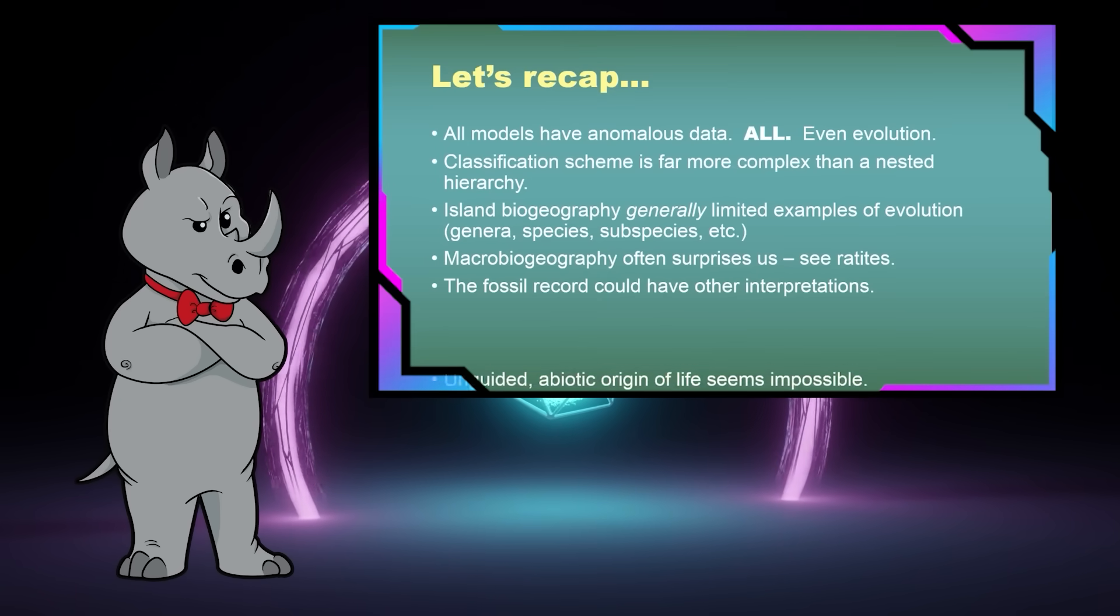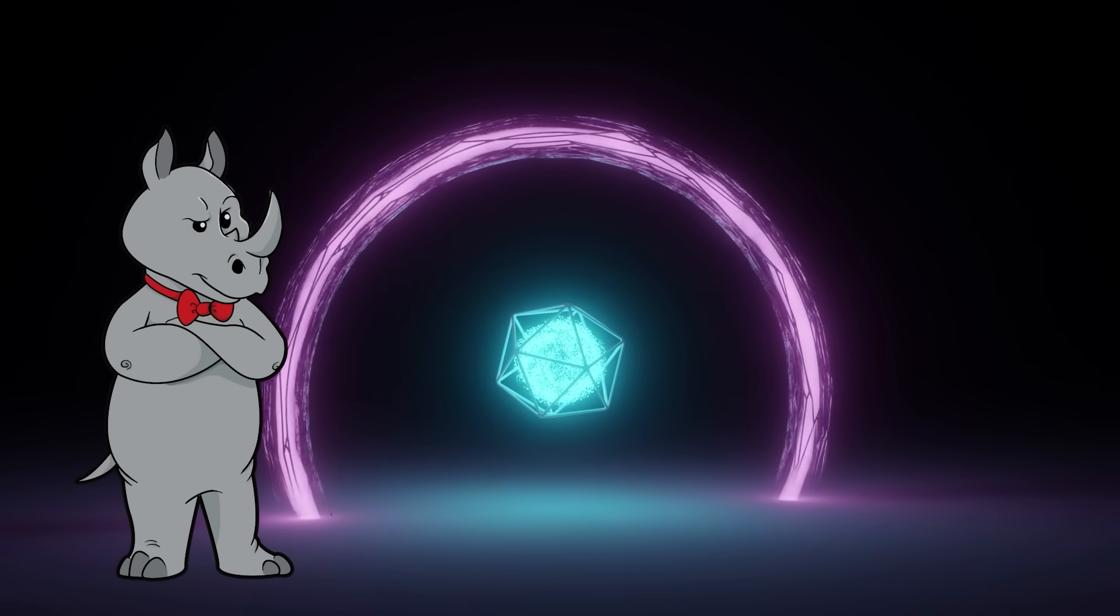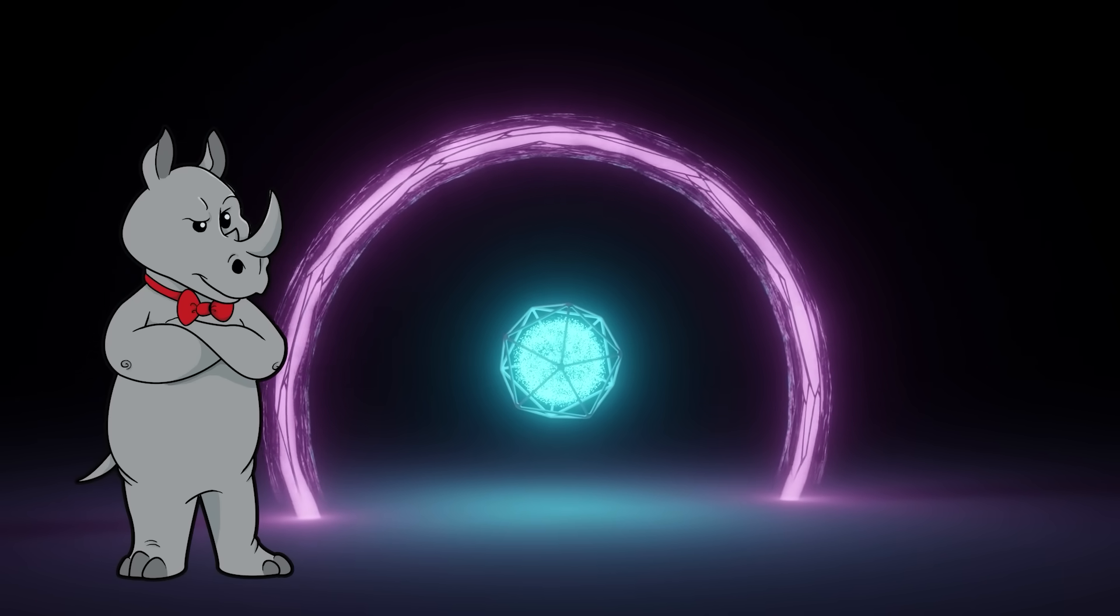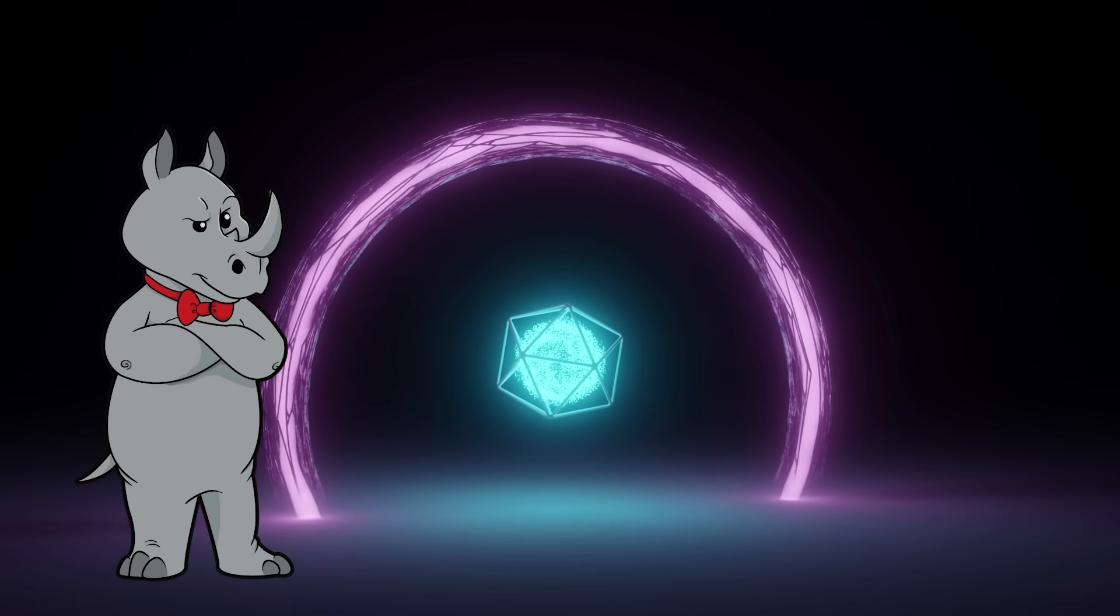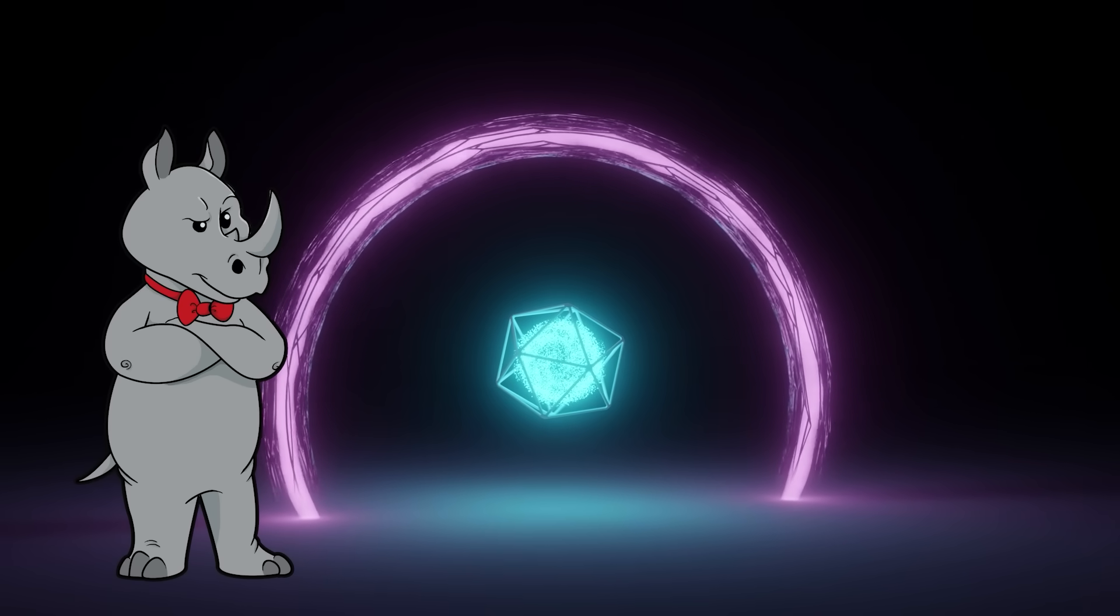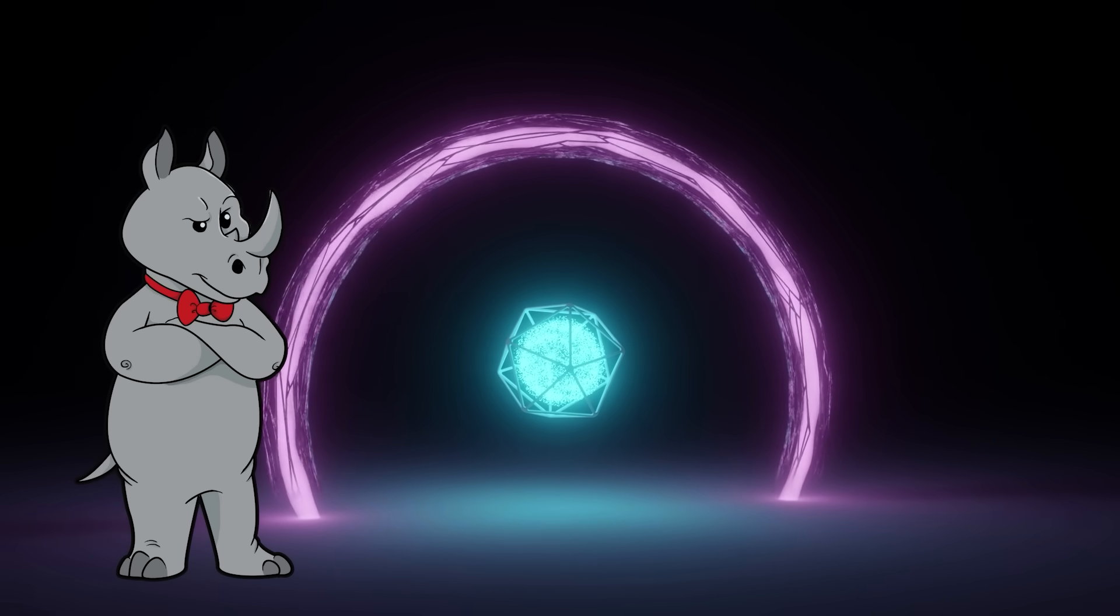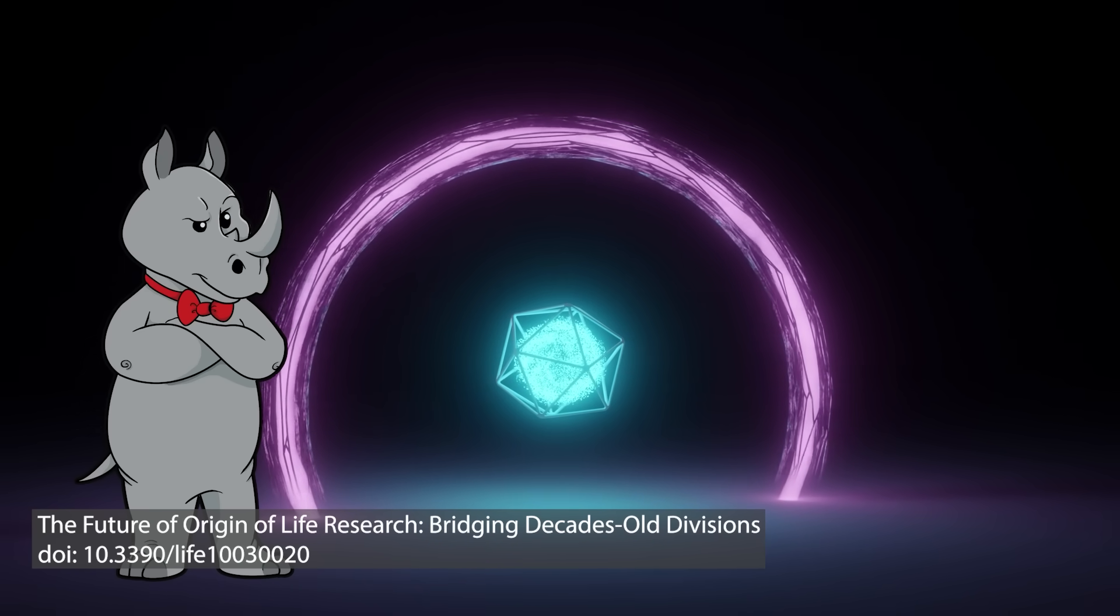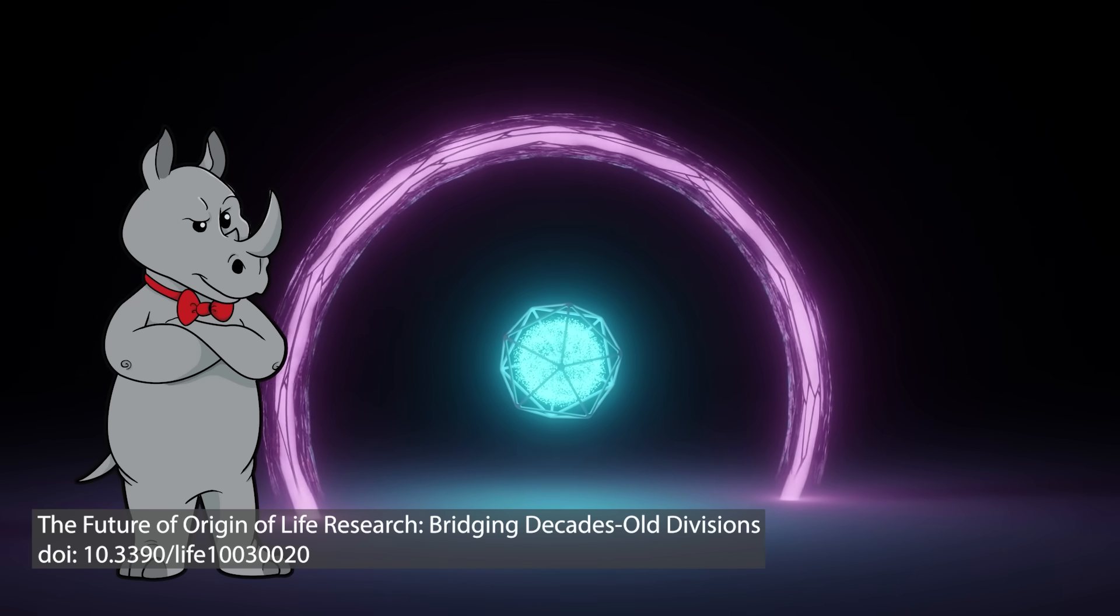And then I argued that unguided abiotic origin of life seems quite impossible from a chemical point of view. Well, as a biologist, specifically with a PhD in biochemistry, you should be aware that life is essentially a cascade of chemical reactions. It's a very complex cascade to be sure, but there is no reason to think that any given chemical interaction that is required for life is impossible outside of life.